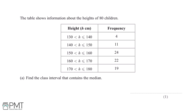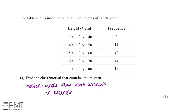The first thing we'll need to know is what the median is. The median is the middle value when they are arranged in ascending order. So if we arrange these 80 children in ascending order of heights, the 40th and the 41st values would be the two middle values.